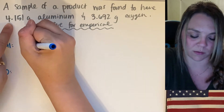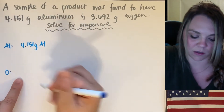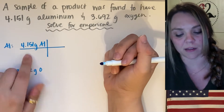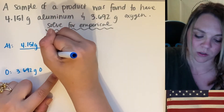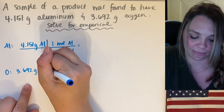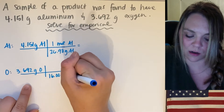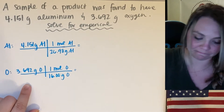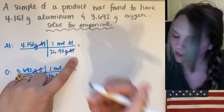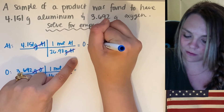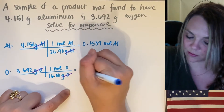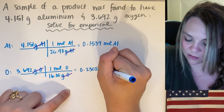I have 4.151 grams of aluminum and 3.692 grams of oxygen, and I'm going to use my molar mass. The molar mass of aluminum is 26.98 grams per one mole, and oxygen is 16 grams per one mole. Grams cancel out, and I get 0.1539 moles of oxygen.